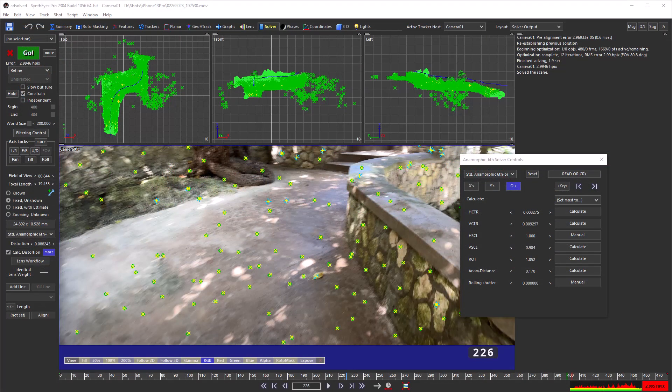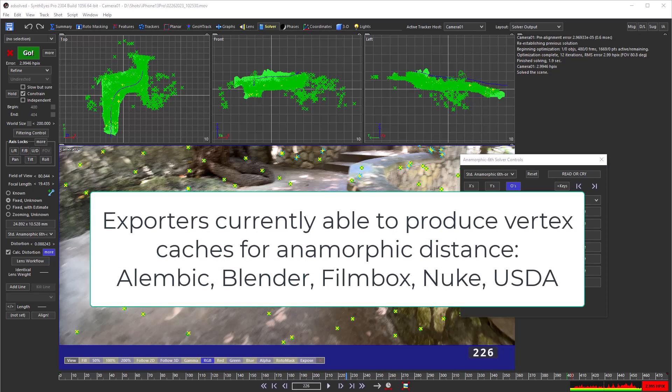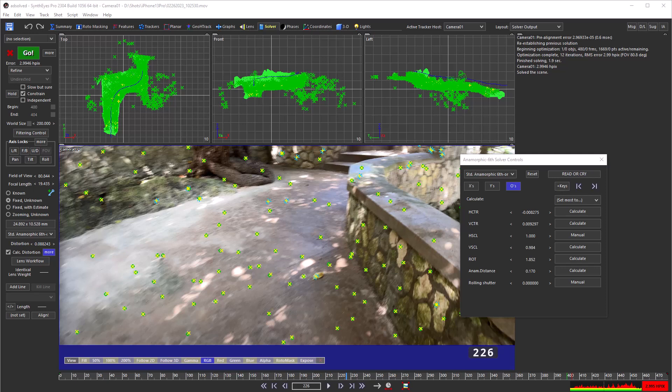We can use a vertex cache to store a compensated version of a mesh on every frame, taking into account the camera viewpoint on that frame. The SynthEyes exporters for FilmBox, Alembic, USDA, Nuke, and Blender can produce vertex caches for every mesh when anamorphic distance is present. Similarly, all tracker positions are animated.